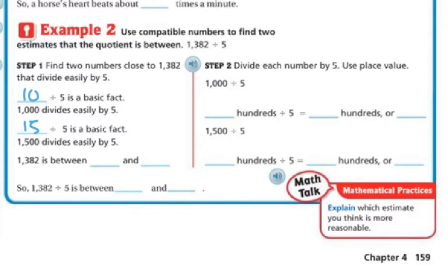Now, 1,382 is between 1,000 and 1,500. So step two now is to divide each number by 5 using place value. So 1,000 divided by 5.